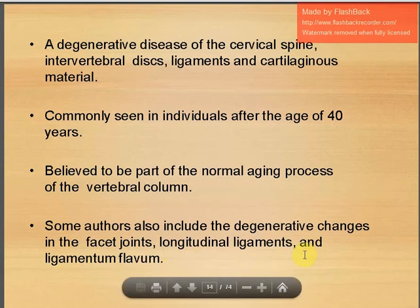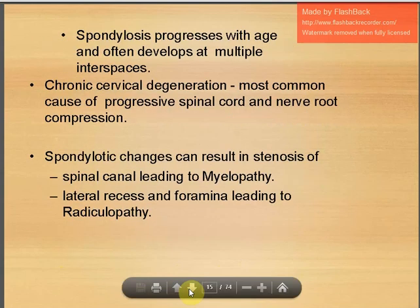It progresses with age and often develops at multiple interspaces. The most common cause of progressive spinal cord compression is chronic cervical degeneration. These spondylotic changes can result in stenosis of the spinal canal leading to myelopathy, or in the lateral recesses and foraminas leading to radiculopathy.